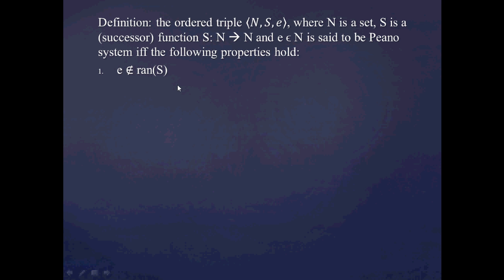Secondly, that s is injective, meaning there's no way that you could take the successor of, say, 5 and get 2, because the successor of 1 is 2. So that would violate the injective rule for this function.